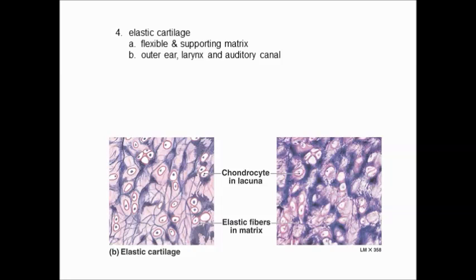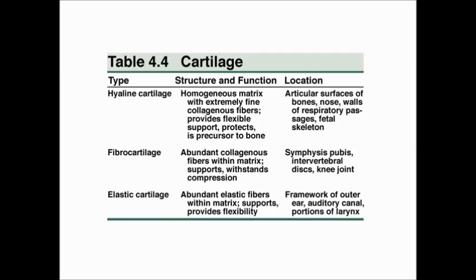Finally, there is a form of cartilage that is dense with elastic tissue — elastic cartilage. Although it has some resistance, being surrounded by chondroitin sulfate, it has flexibility the other cartilage types do not have. Your outer ear — the auricle — is composed of it, your larynx or voice box has elastic cartilage within it, and the canal going into your ear also has elastic cartilage. It is quite flexible material.